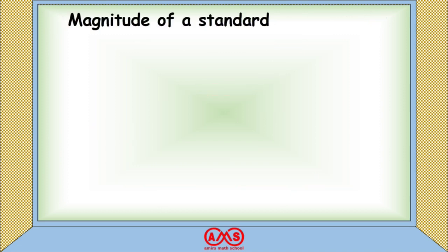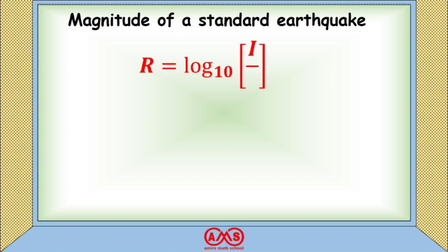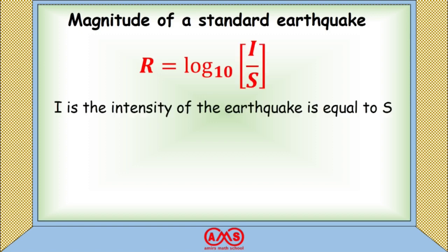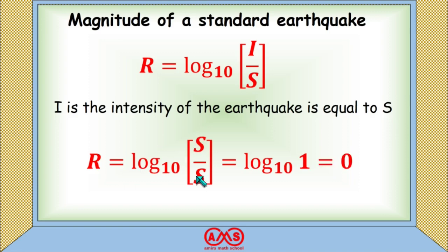The magnitude of a standard earthquake is given by R = log₁₀(I / S). Since I equals S in the case of a standard earthquake — the smallest detectable earthquake — we can write R = log₁₀(S / S) = log₁₀(1) = 0.